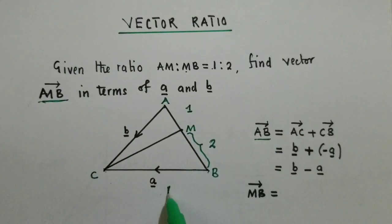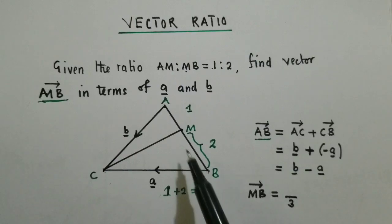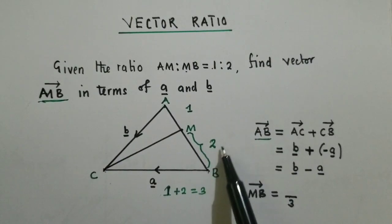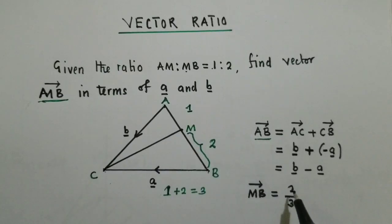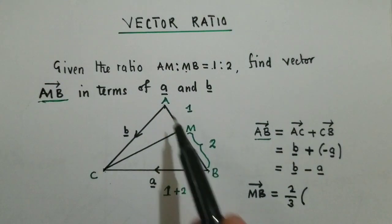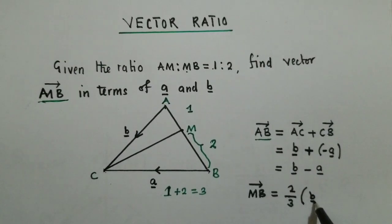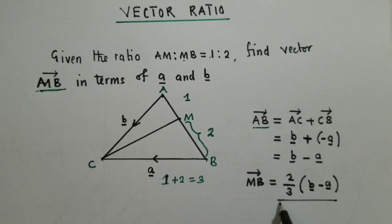1 plus 2 equals 3. So this 3 will be our denominator. The total number will be 3. Now we check what we've been asked: MB. What ratio represents MB? It's 2. So we write 2 on top here. If it was AM, we could have written 1. So we multiply it by what we've found, vector AB. What is vector AB? That is b minus a. And this is our solution. This is how we use the ratios. Thank you and bye-bye.